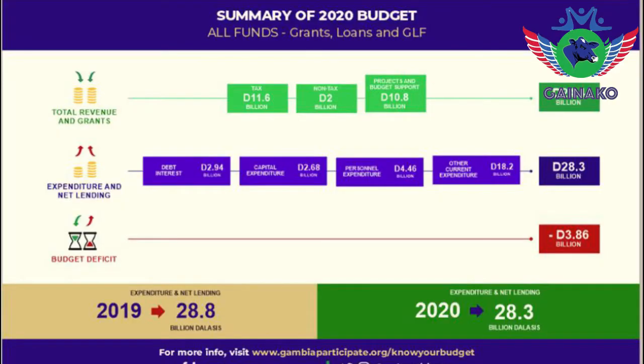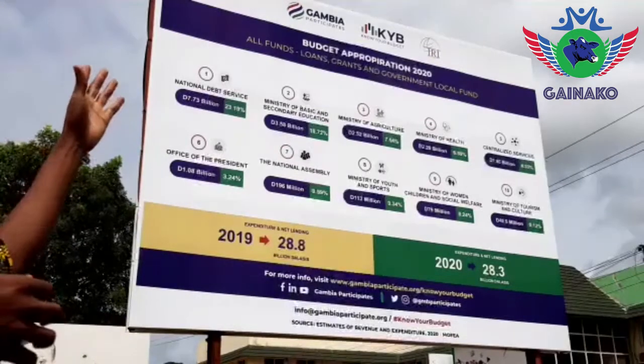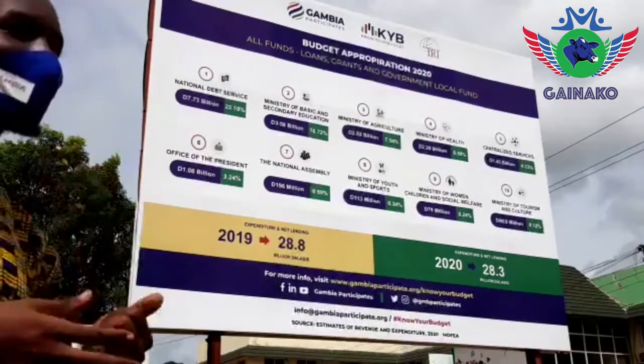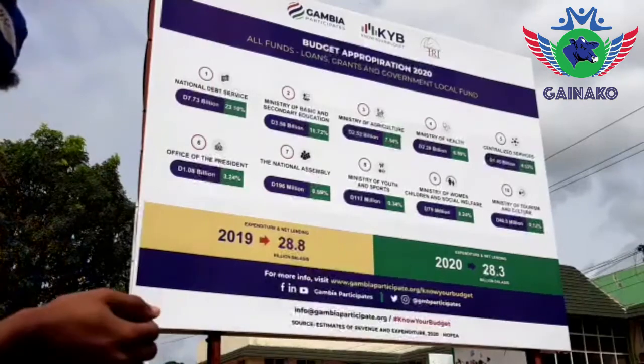Mr. Majalo added that the organization presented the government budget on the billboards in a more citizen-friendly version. The billboards are designed to ignite interest in citizens' budget participation, while creating space for budget transparency and accountability in the Gambia. Gambia Participates felt the need to come up with an initiative that would spark the interest of Gambians to actually know their budget — that's why they called it Know Your Budget.